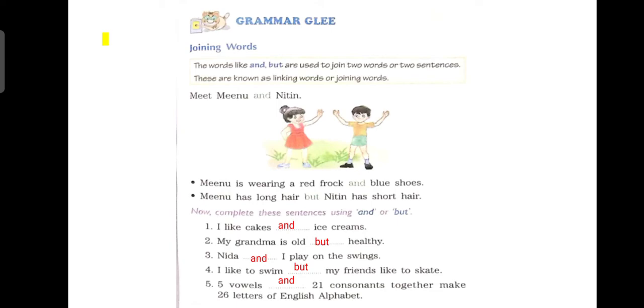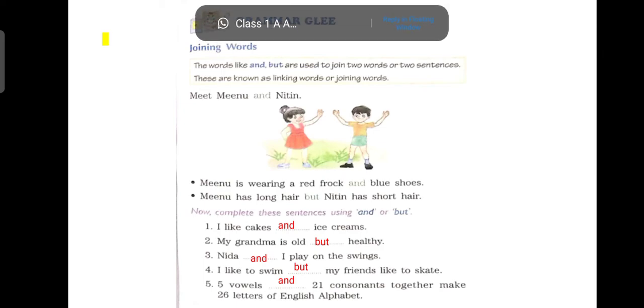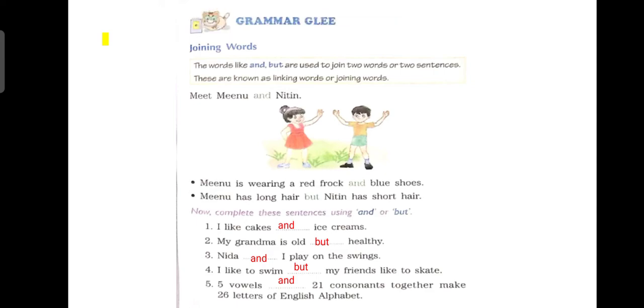Here we are talking about opposite things, so we will be using BUT here. So let's discuss these underlined sentences. I like cakes dash ice creams. I like cakes and ice creams. Sab khane pehne ki meethi meethi cheezein hai.